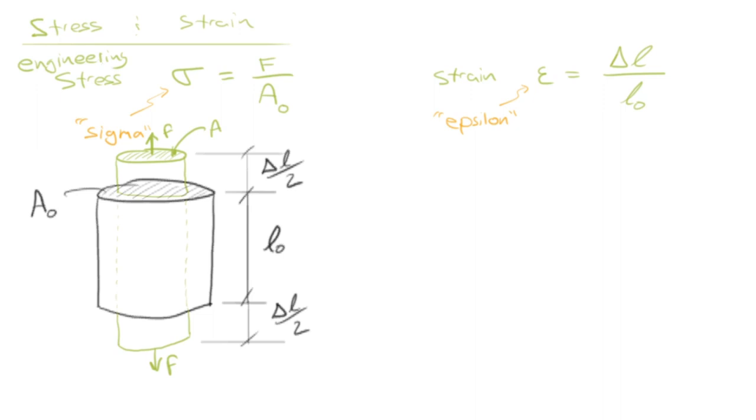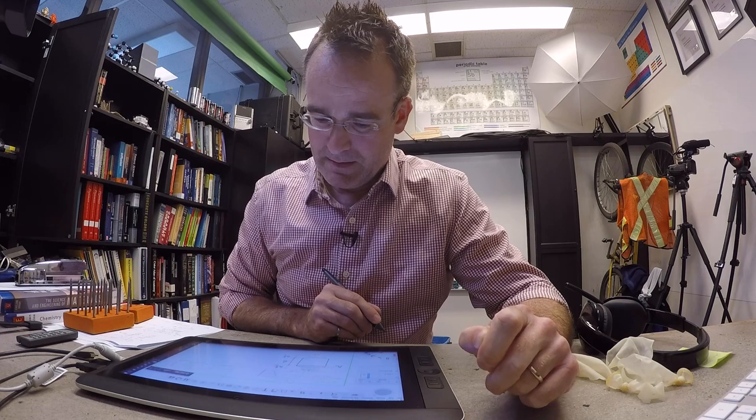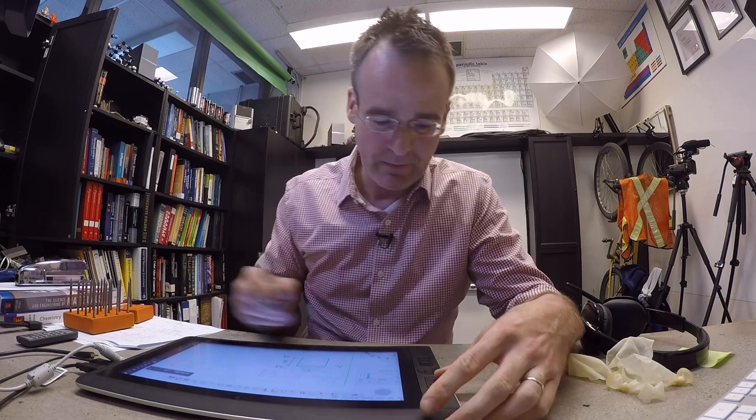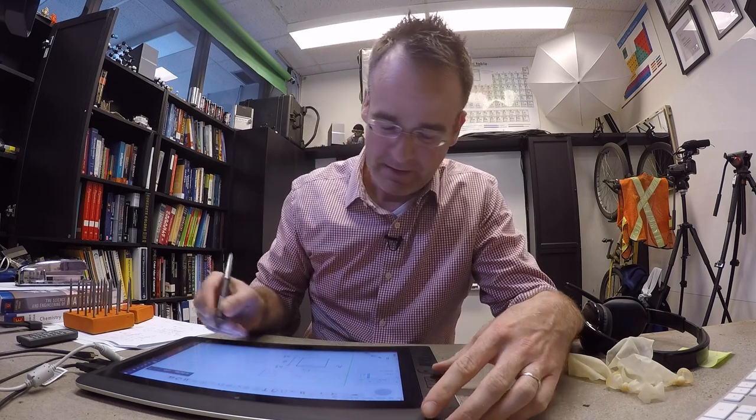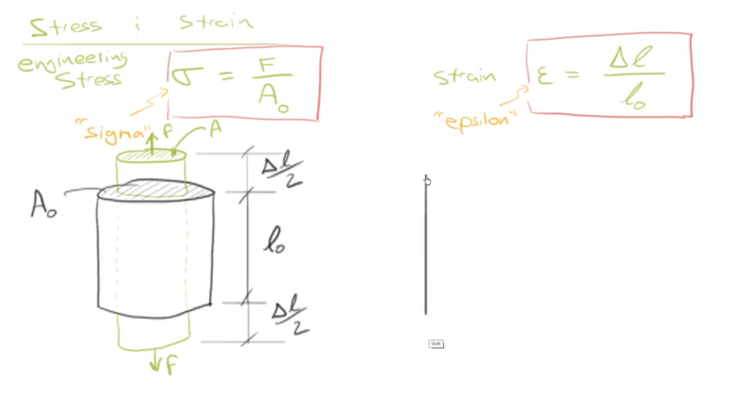And so we have now defined the terms that we need in this equation for stress and for strain. And that's fantastic. So then the last piece of the puzzle here is to show you that if we were to then do that for those two different samples...